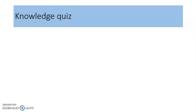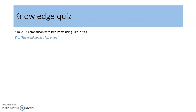Hopefully you've had a go at doing that task. I'm going to go through the answers and definitions to those words — mark them as you go. So the first one was a simile. This is a comparison with two items using 'like' or 'as'. Example: 'the wind howled like a dog.' Number two, personification — an inanimate object is given human-like qualities. So: 'the sun smiled.'